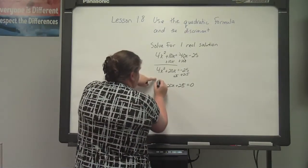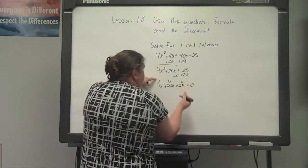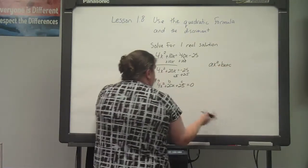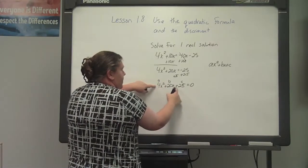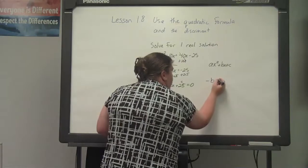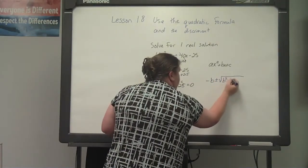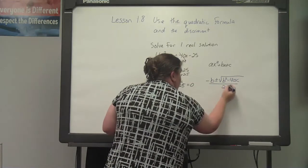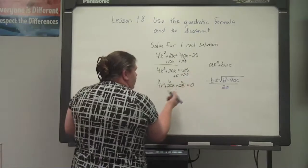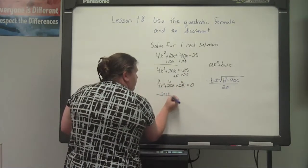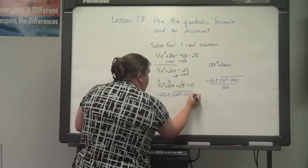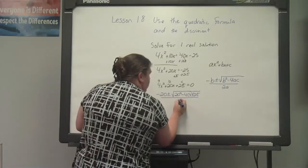From here, I know that a is 4, b is 20, and c is 25, because the standard form is ax squared plus bx plus c. So I can use the quadratic formula: negative b plus or minus the square root of b squared minus 4ac all over 2 times a. So I have negative 20 plus or minus the square root of 20 squared minus 4 times 4 times 25, all over 2 times 4.